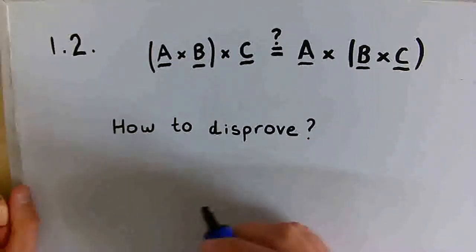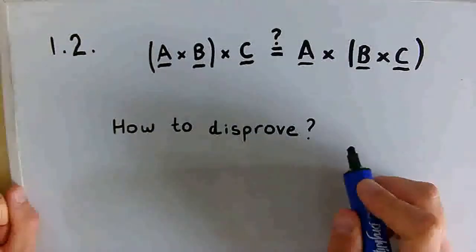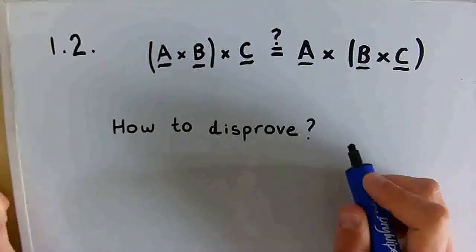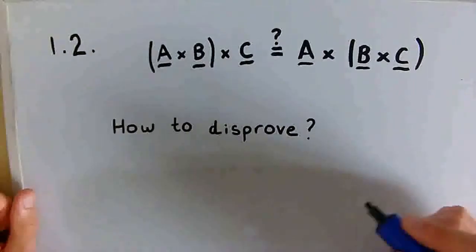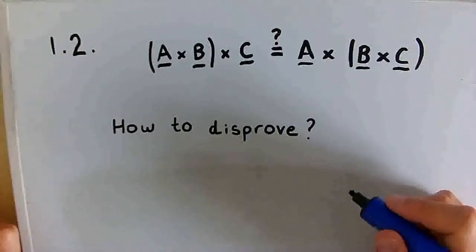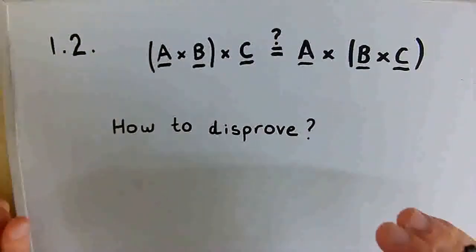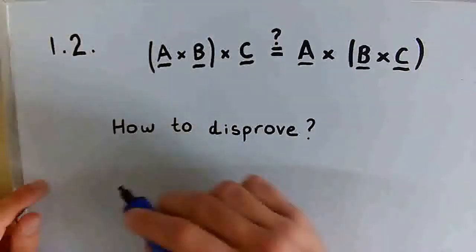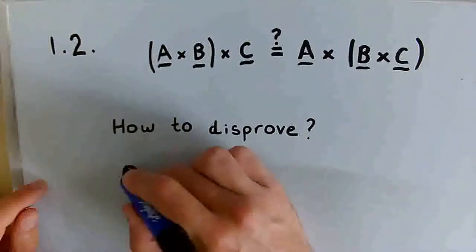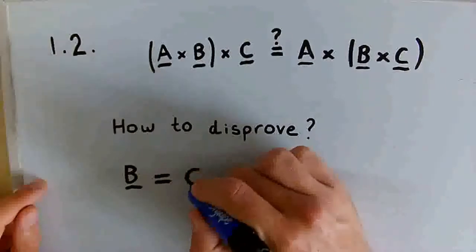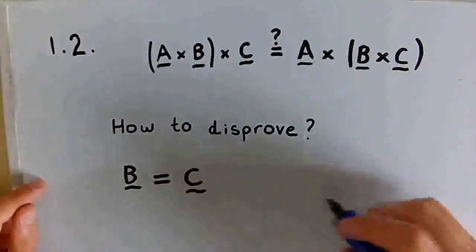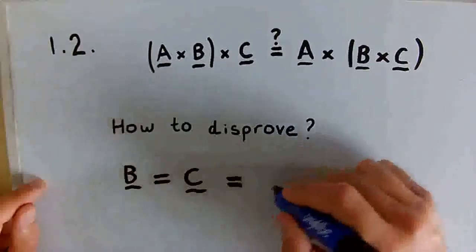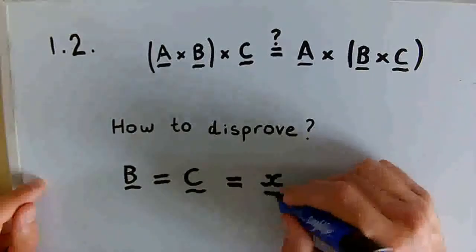So at first, you might just want to pick three random vectors and try and disprove it that way and have that as a counterexample. But actually, the simplest case would be to choose a case in which the vectors B and C are equal, for example equal to the unit vector in the positive x direction.